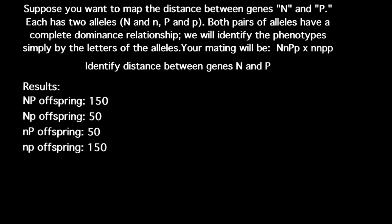Here's a problem. Suppose you want to map the distance between genes N and P. Each has two alleles: capital N and small n, capital P and small p. Both pairs of alleles have a complete dominance relationship. We will identify the phenotype simply by the letters of the alleles. The mating is one parent heterozygous for both genes crossed with a parent homozygous recessive for both genes — we call such a cross a test cross.